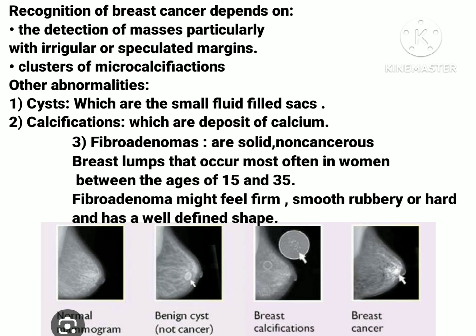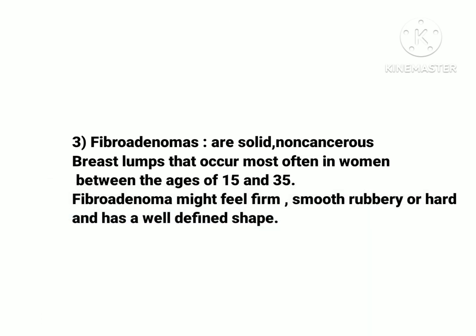Other abnormalities detected through mammogram include: cysts — small fluid-filled sacs (you can check the second image showing cysts); calcifications — deposits of calcium, where large deposits are called macrocalcifications, usually occurring as a result of aging, and smaller deposits are called microcalcifications; and fibroadenomas — solid non-cancerous breast lumps that occur most often in women between the ages of 15 and 35. A fibroadenoma might feel firm, smooth, rubbery, or hard, and has a well-defined shape. This ends the topic; our next topic will be on mammography equipment. Thank you for watching, take care.